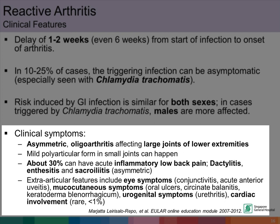Extra-articular features can also happen in reactive arthritis. These include eye symptoms like conjunctivitis and uveitis, mucocutaneous symptoms like oral ulcers, circinate balanitis, and keratoderma blennorrhagicum, urogenital symptoms like urethritis, and cardiac involvement like carditis and heart conduction abnormalities, but this is very rare.